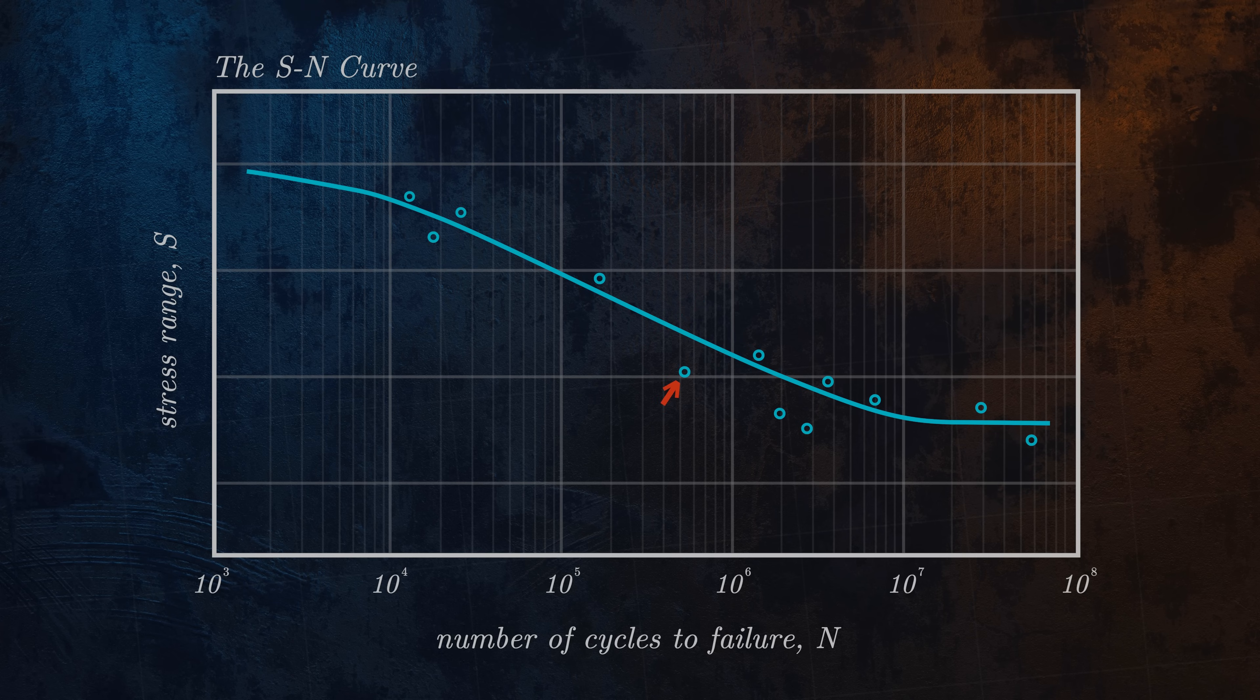This test piece, for example, failed at a much lower number of cycles than predicted by our S-N curve. For this reason, S-N curves published in engineering codes are normally shifted downwards by a certain number of standard deviations to give a reduced probability of failure. Here, by shifting the mean curve down on the vertical axis by two standard deviations, we have reduced the probability of failure from 50% to 1%.